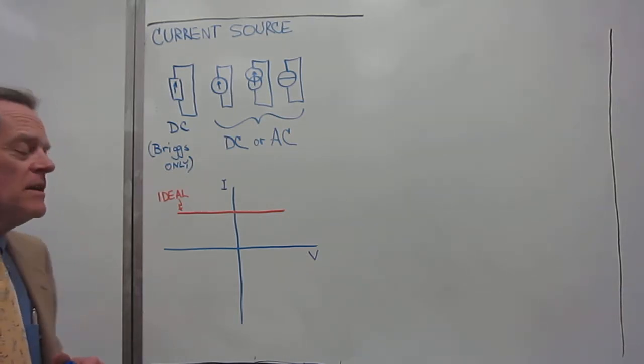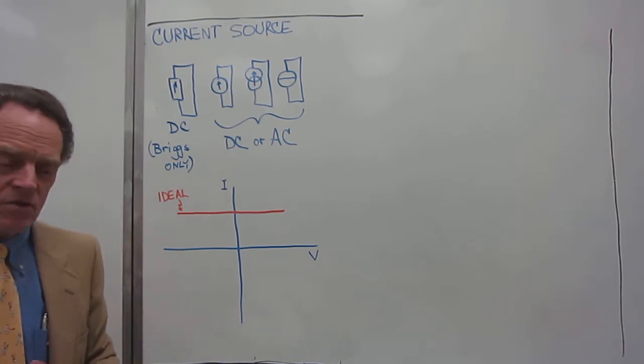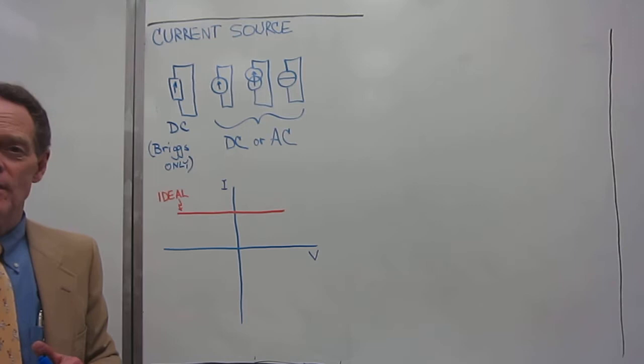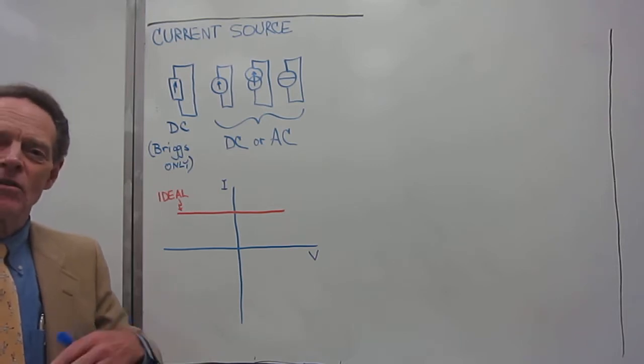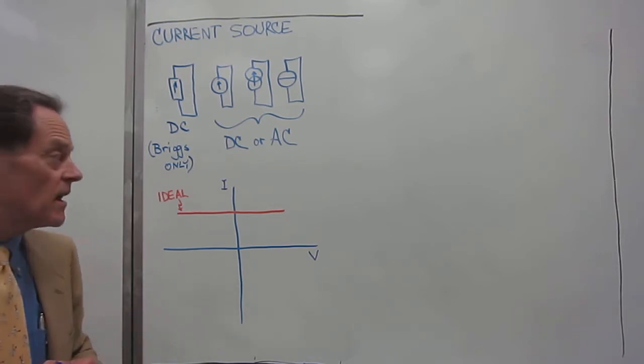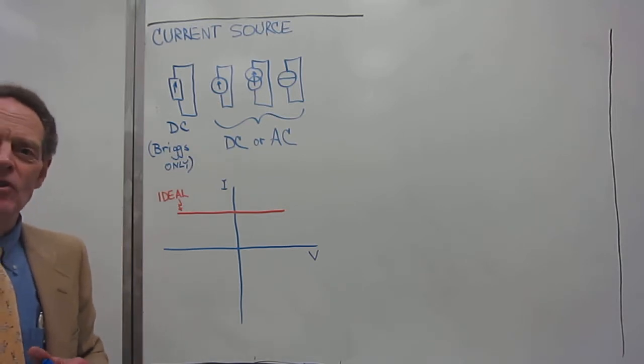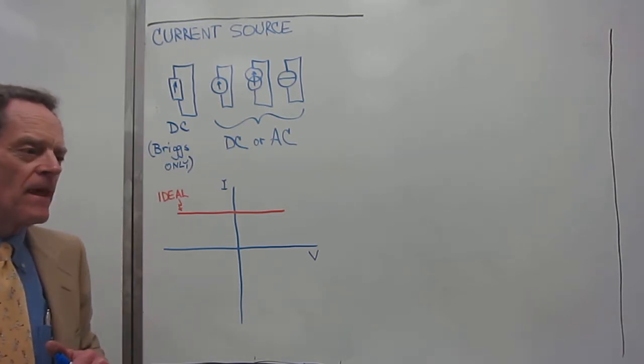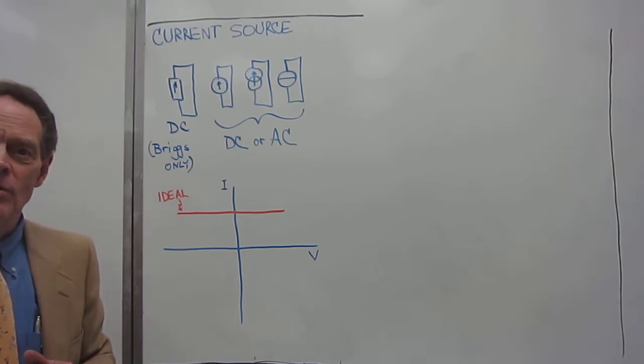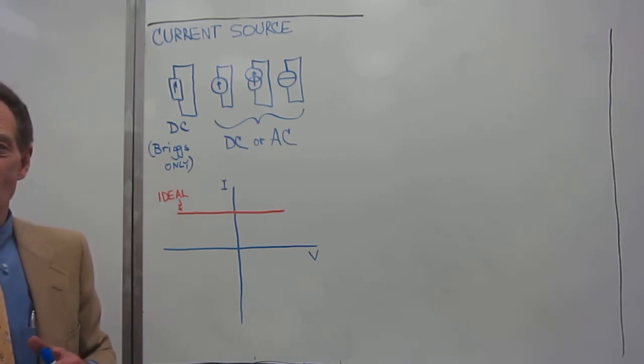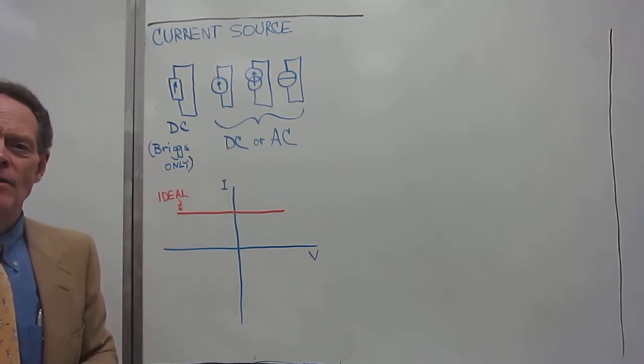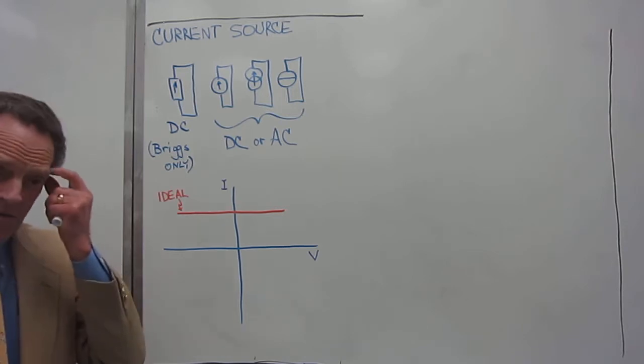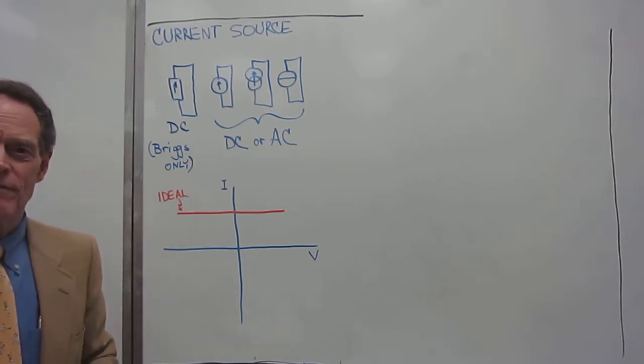The virtue of a current source is the usefulness for you as you go through this, at least the early parts of the curriculum here at UCLA, is that it's a good model of how active components work, such as transistors or, in particular, bipolar junction transistors. You will see current sources in models of bipolar junction transistors. You will probably run into that in 115A.